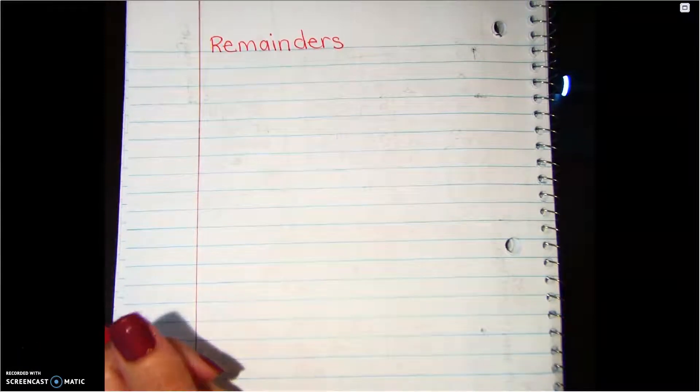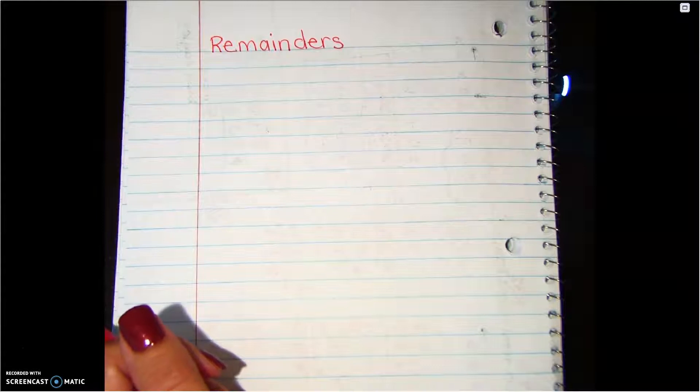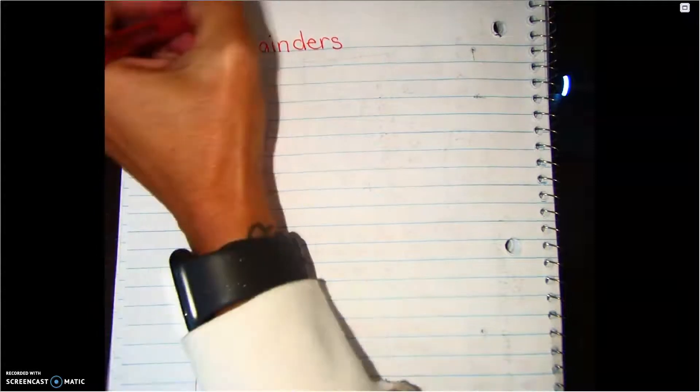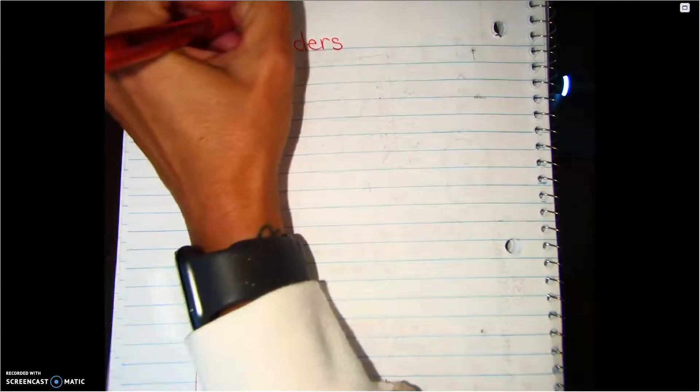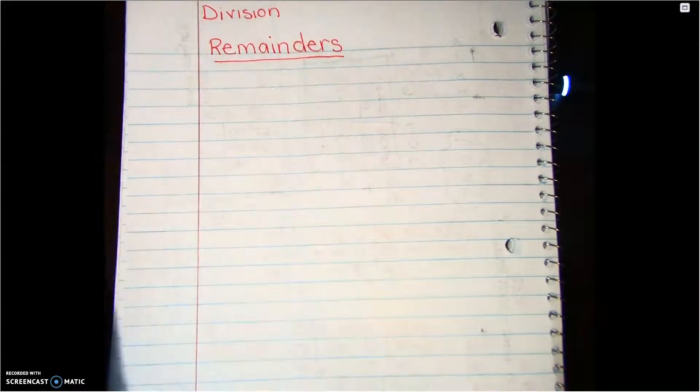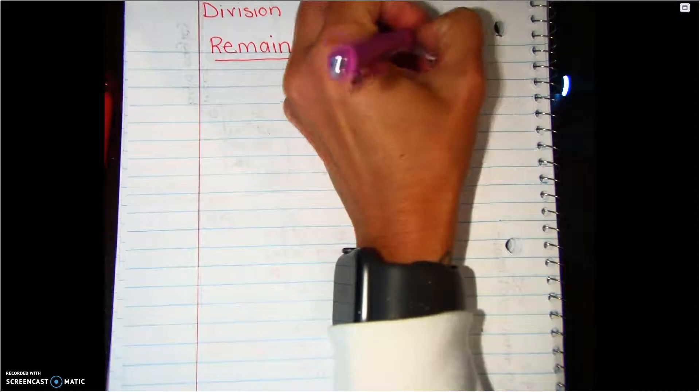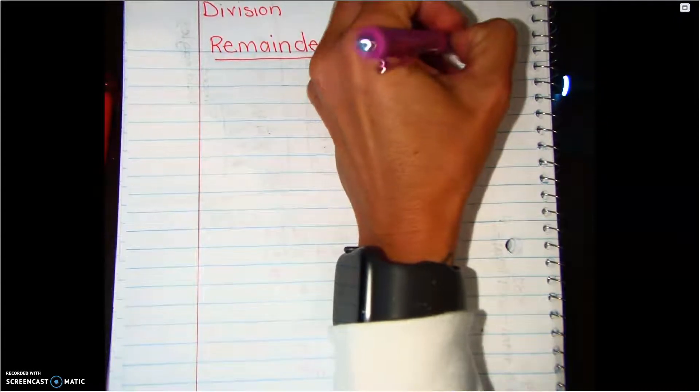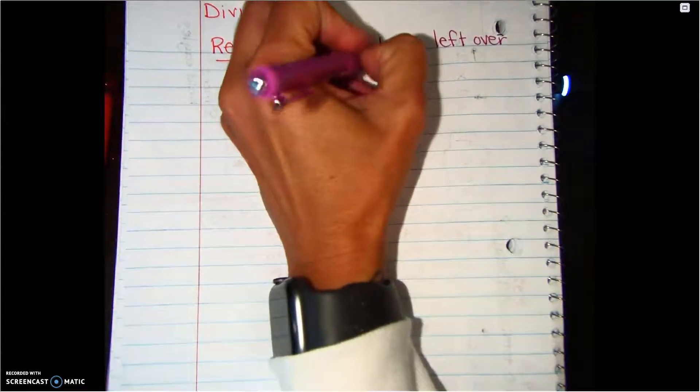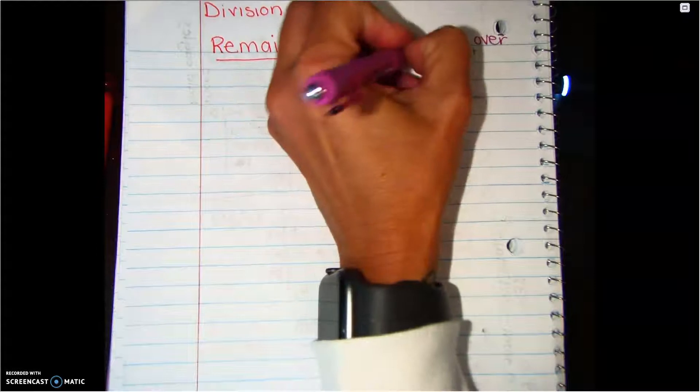Hi my mathematicians, now that you are experts in multiplication of big numbers, we are going to move into dividing. Division, and what we're specifically going to be talking about today is remainders. Remainders is what is left over after dividing into equal groups.